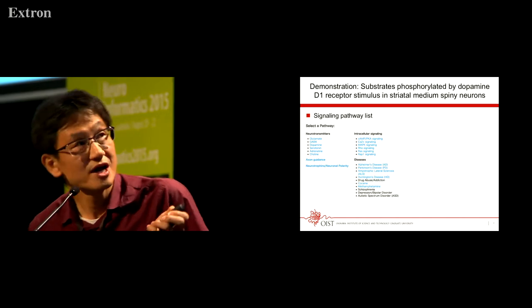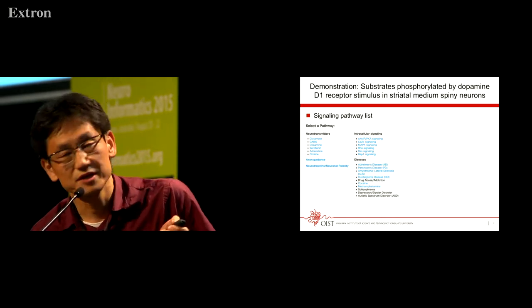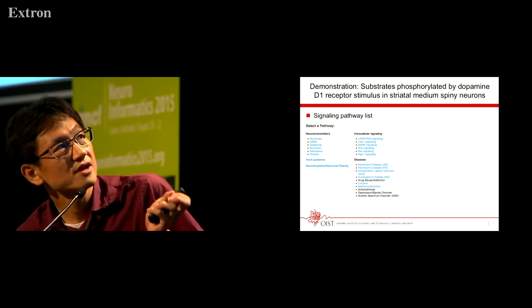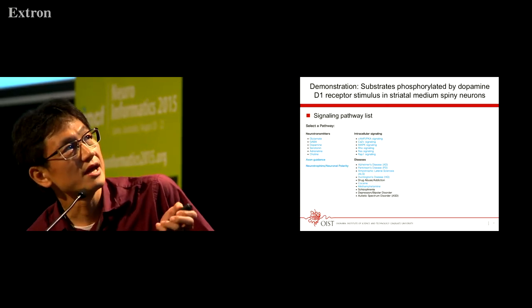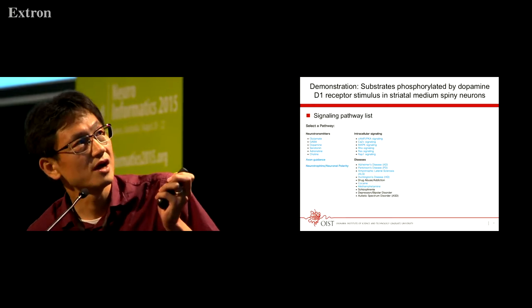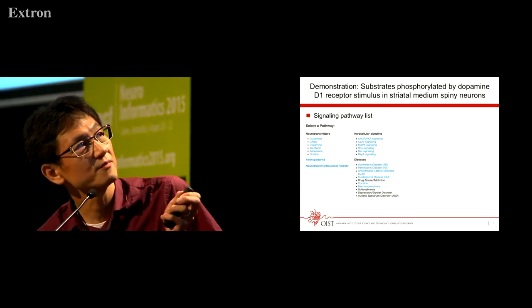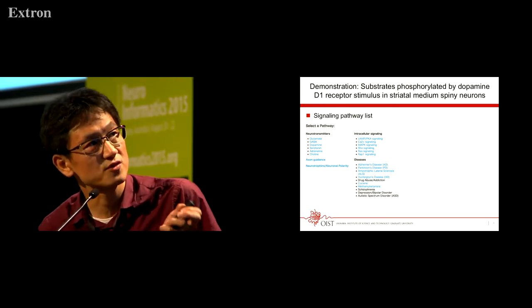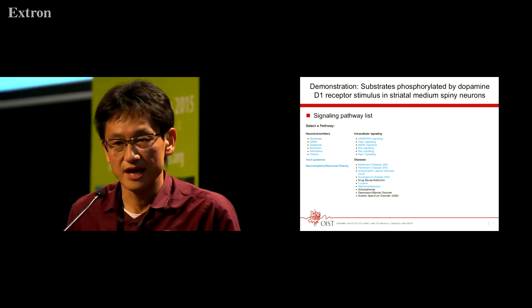From now on, let me show one demonstration using our database system. The target of this demonstration is to find the substrate phosphorylated by a dopamine D1 receptor stimulus in striatal medium spiny neuron, which is involved in emotion control.